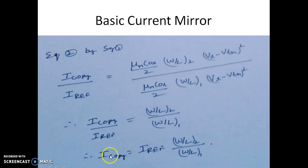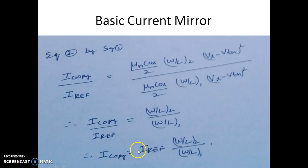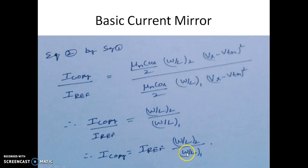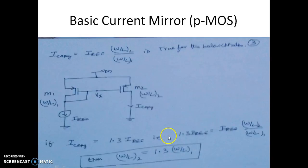From this expression for the two transistors, it is very clear that you can copy the current onto M2 depending on the W/L of the two transistors. So I_copy equals I_reference multiplied by the W/L of the second transistor divided by the W/L of the first transistor.